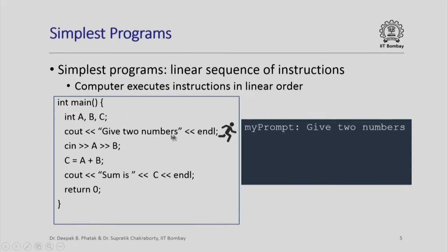This declaration says there are going to be three variables, all of type integer. The next statement is the first statement that the computer actually executes, shown here by a running icon. When the computer executes this statement, you see a prompt on your screen followed by the message 'give two numbers'. The computer then goes to execute the instruction that appears exactly after this in the sequence.